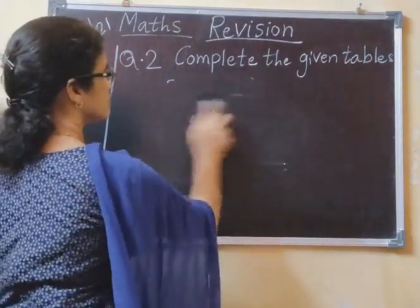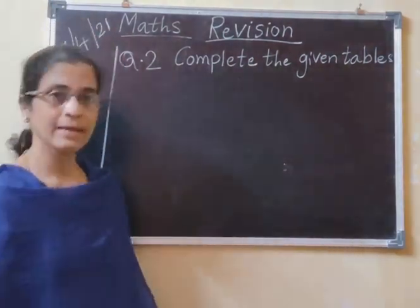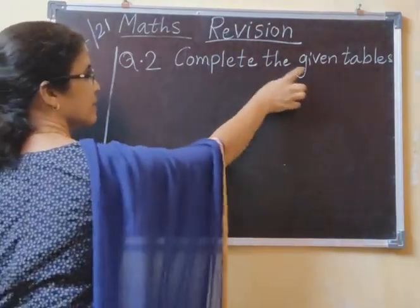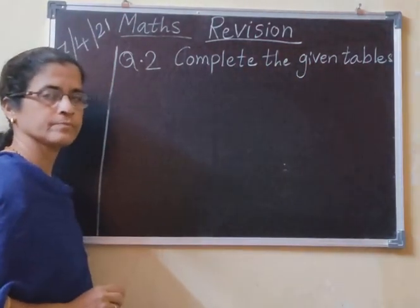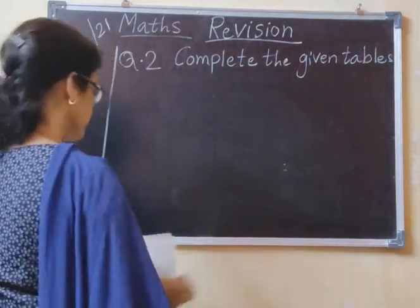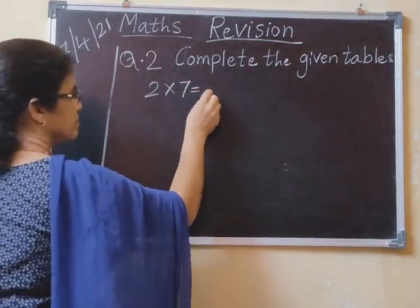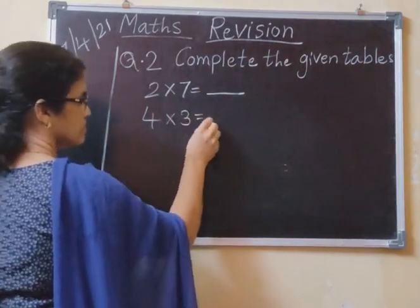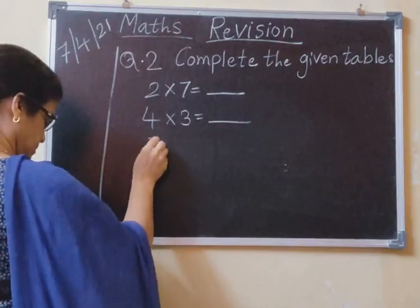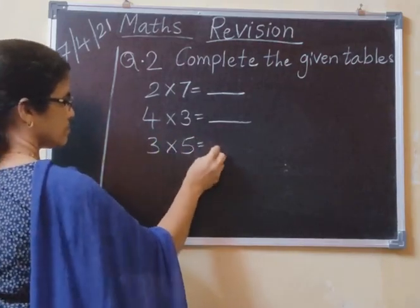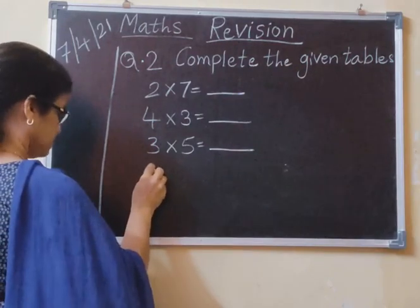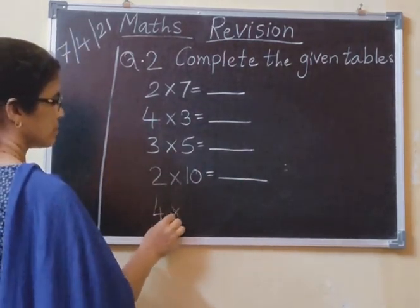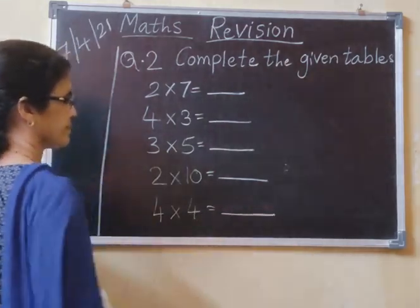Now I am giving you homework. Complete the given tables. Now write: 1 seven is 7, 3 fours are 12. 2 sevens are 14, 6 twos are 12.